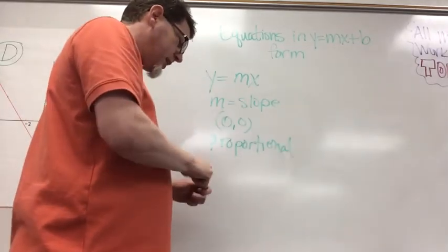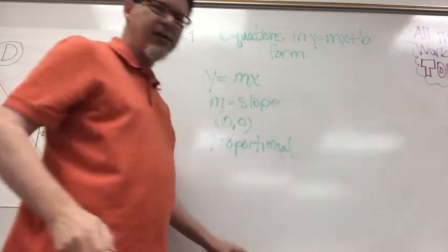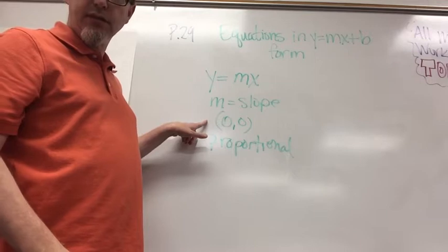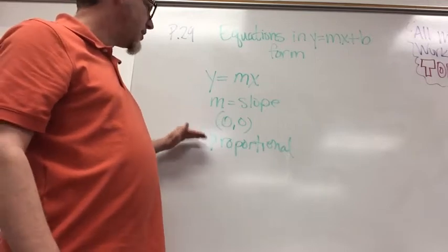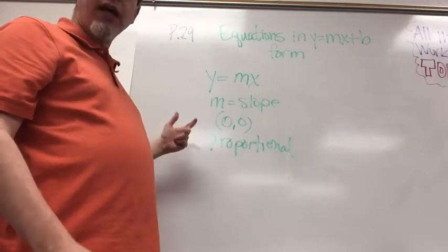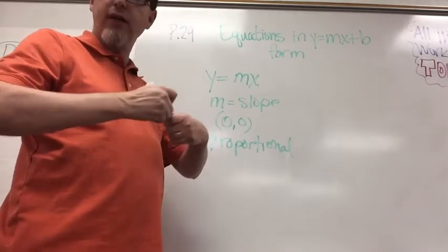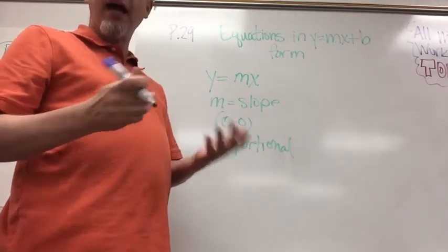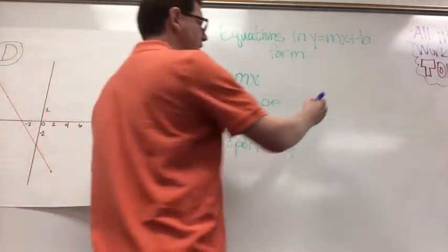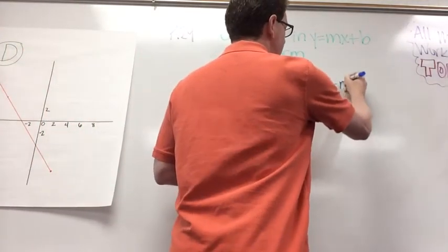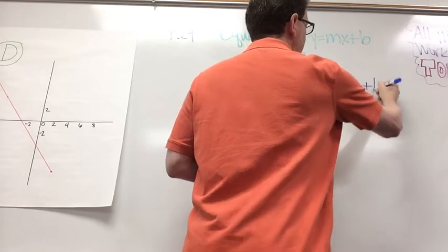Well, sometimes lines don't pass through 0 comma 0, which means they're not proportional. So we have another way of writing those types of equations of lines, and we add one part to it. Instead of just y equals mx, we add that b.